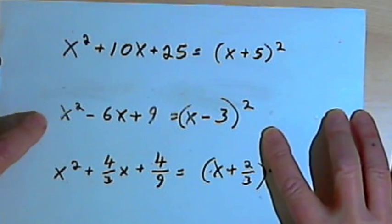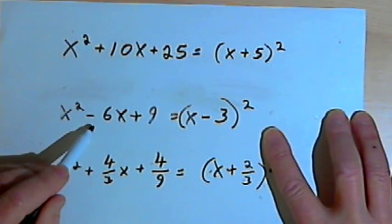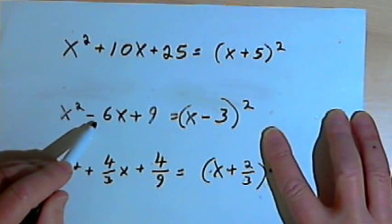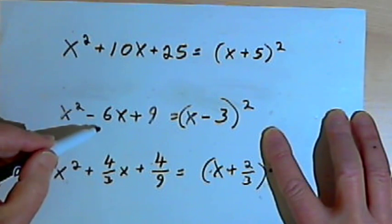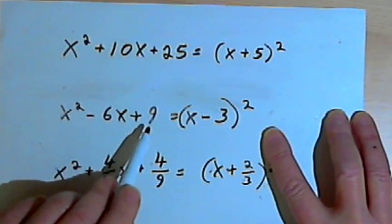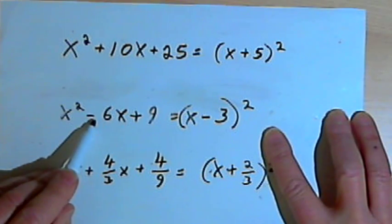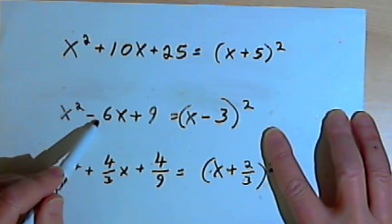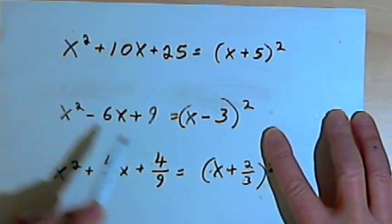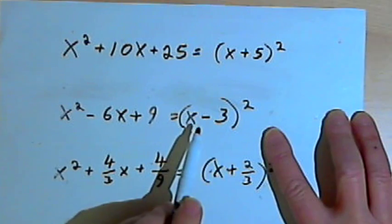Let's look at another one. I've got x squared minus 6x plus 9. The middle term is minus 6x, so the coefficient is negative 6. If I divide that in half, I get negative 3. And if I square negative 3, I get a positive 9 — that's the last term. If I want to know what that looks like as a binomial squared, I take the coefficient negative 6, divide it in half to get negative 3, and that gives me the constant of my binomial, which gets squared.